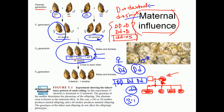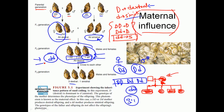Now, if you take individuals from the F2 generation and cross each other, most of them again will be dextral. The only way sinistral coiling will be generated is if the mother taken has small d small d — the homozygous recessive for sinistral. If the mother has even one capital D, all offspring will be dextral. The only way sinistral coiling is generated is if the mother is homozygous recessive. This is maternal influence.